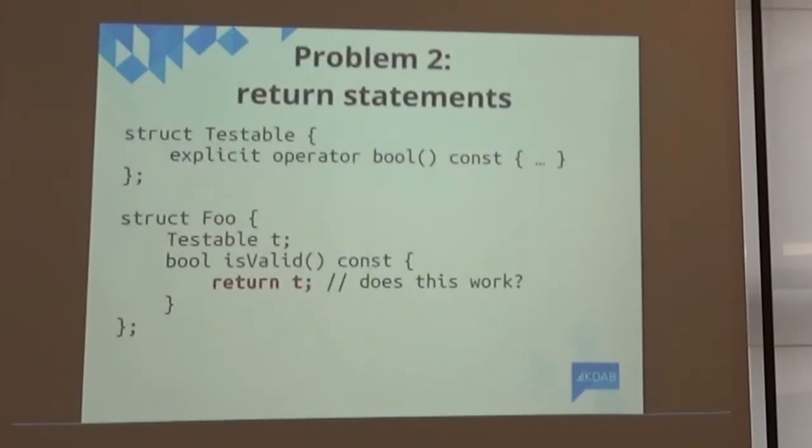And finally, second thing, which is a quiz for you. In Qt, we use pimple a lot as an implementation detail. So, we've got this testable type, which is actually the hidden implementation, and we've got methods, public methods, that just say return t, expecting that to be convertible to bool. Do you think that still works?